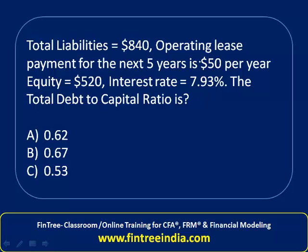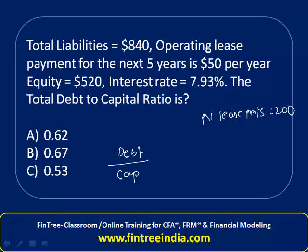So let's calculate how much that is. Clear TVM on the financial calculator: 50 should be the payment, 5 should be N, 7.93 should be I/Y. Compute present value — the present value of lease payments comes out to be 200.